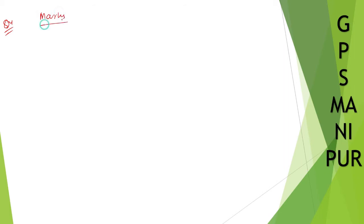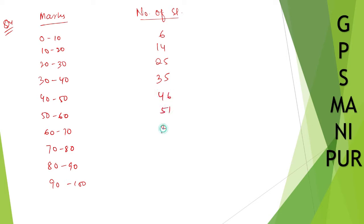So let us draw marks. Marks given are 0 to 10, 10 to 20, 20 to 30, 30 to 40, 40 to 50, 50 to 60, 60 to 70, 70 to 80, 80 to 90, 90 to 100. And number of students: 6, 14, 25, 35, 46, 51, 32, 24, 7, 2.